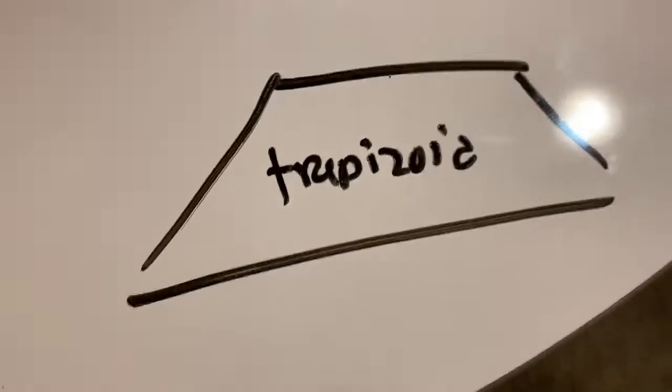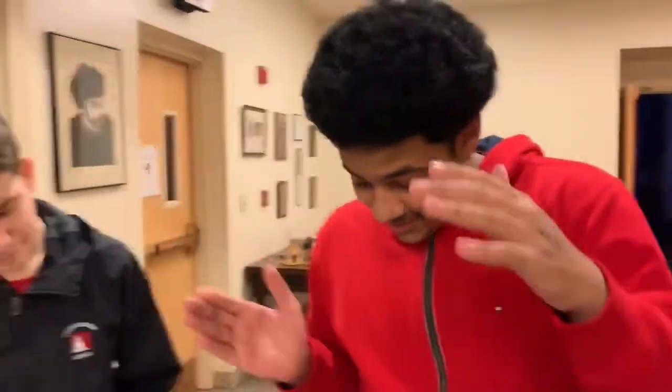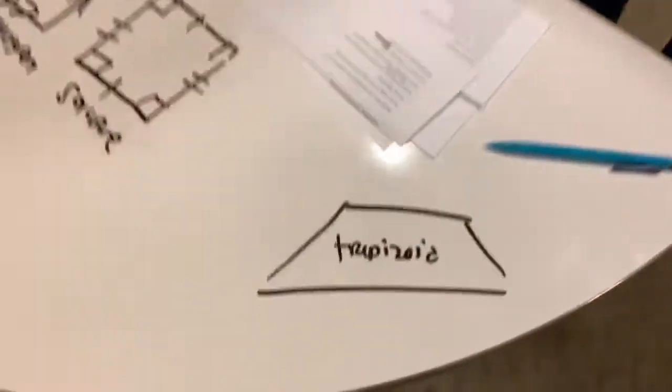Trapezoid has one pair of parallel sides, two angle sides are kinda slanted, making it one unique type of shape.